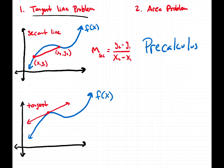We can't apply the slope formula directly because we need two points and we have only one point. This is problem number one, the tangent line problem. How do we find the slope of a line tangent to a function if we know only one point? This is calculus. This is our transition from pre-calculus to calculus.